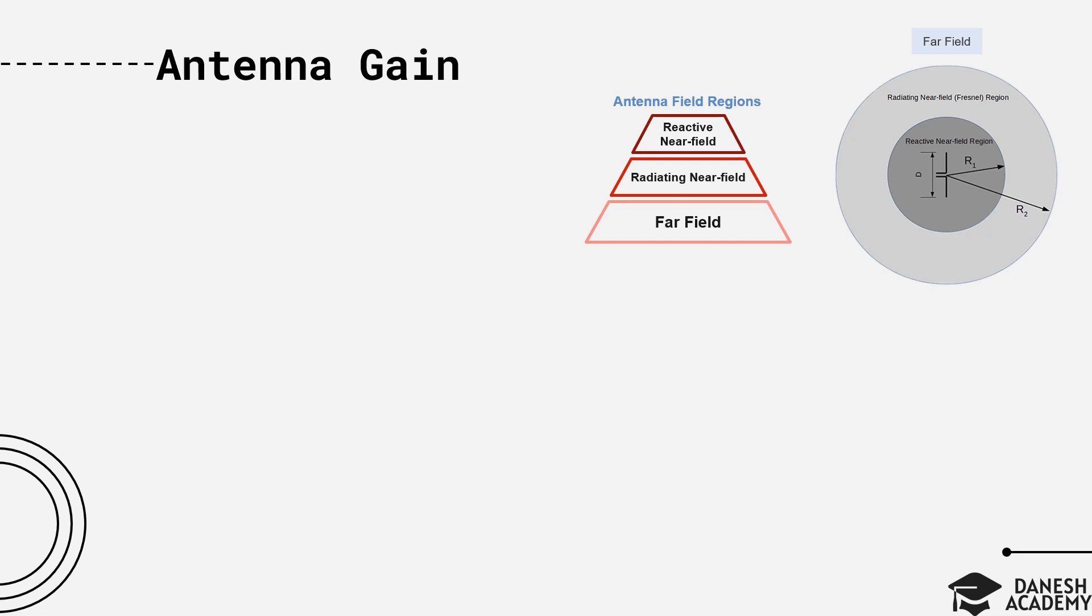The parameters that we define here for an antenna, including radiation pattern, directivity, and gain, are called far field parameters, since they describe the behavior of an antenna in far field region.